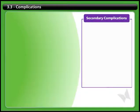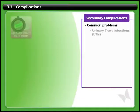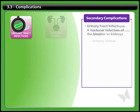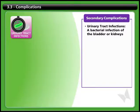People with spinal cord injury need to be aware of possible secondary complications so they can take steps to prevent them. There are two common problems that affect the urinary system of a person with spinal cord injury: urinary tract infections and urinary stones. Urinary tract infections, known as UTIs, are bacterial infections of the bladder, and in some more serious cases, the kidneys.